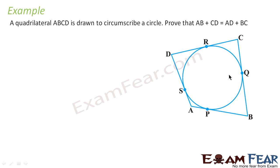A quadrilateral ABCD is drawn to circumscribe the circle. We have to prove that AB plus CD equals AD plus BC. The key idea is that from any external point, two tangent lengths are equal. For example, from point D, two tangent segments to the circle are equal in length.